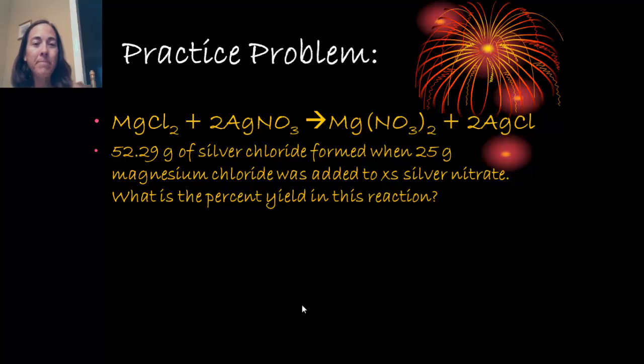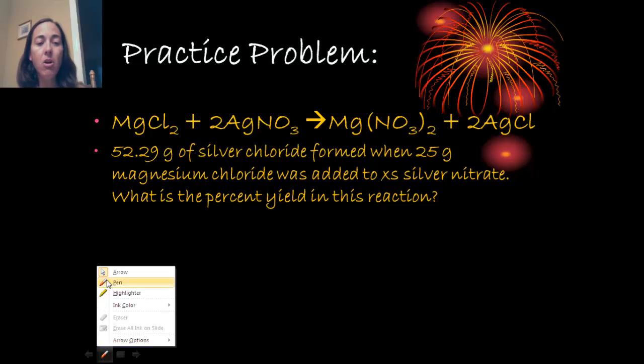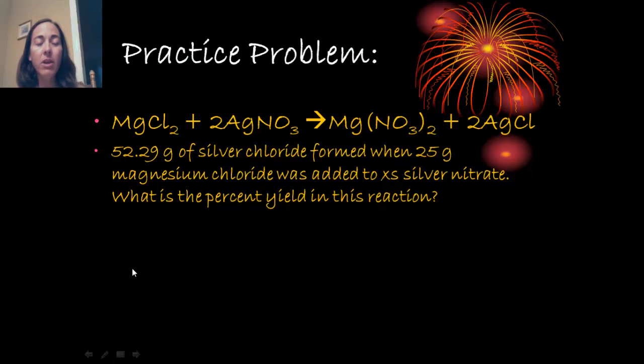Alright, last one. Here I have a balanced equation. Magnesium chloride reacts with silver nitrate. And I have 52.29 grams of that. And I'm forming that silver chloride from 25 grams of magnesium chloride. What is the percent yield in this reaction? Okay, so let's start off identifying our numbers here. You actually form 52.29 grams. So this is your actual yield.